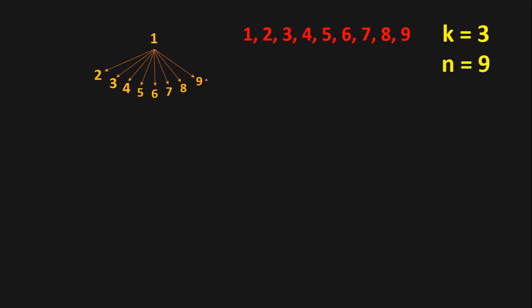If we choose any of those, the length of the combination becomes 2, but we need combinations of length 3. For the pair starting with 1 and 2, we have multiple choices: 1+2+3=6, 1+2+4=7, 1+2+5=8, and 1+2+6=9.